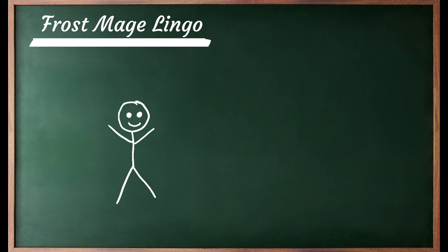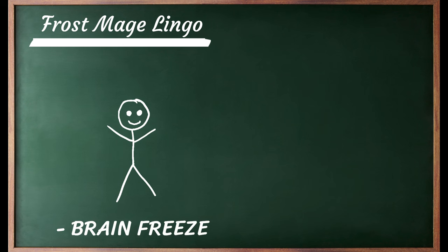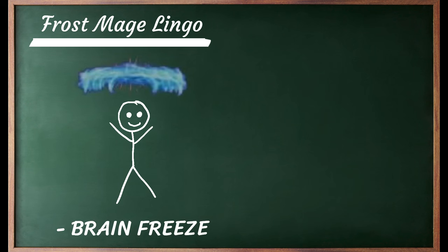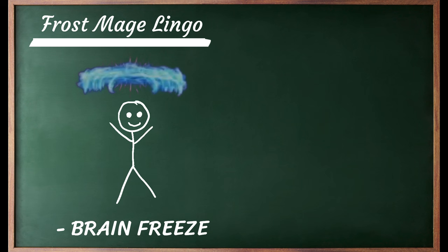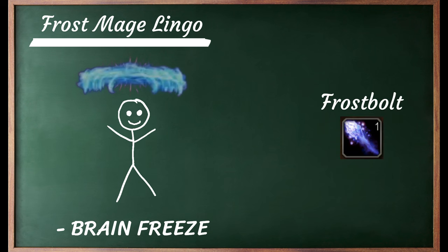The next thing we're going to look at is Brain Freeze. It looks like this up here, and it goes directly above your character. You get that by casting Frostbolt.